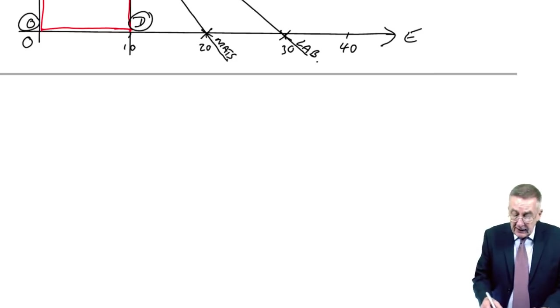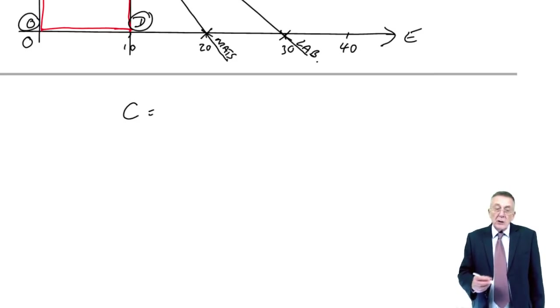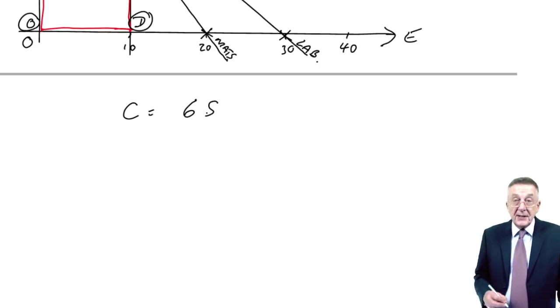And what we do is we write up the equation for the objective function. And if you look back, we have that. It was the total contribution, whatever happens is 6s plus 9e.